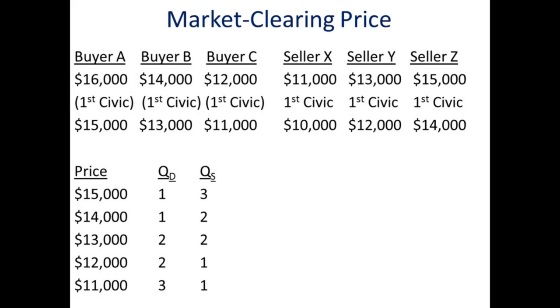Sometimes this process by which the market-clearing price comes about is said in non-Austrian treatments to be brought about by trial and error. But that's not the case — that's not the argument we're making. The argument is that buyers and sellers are able to anticipate where the market will clear. This is what makes a good entrepreneur: they can anticipate what the actual market price that clears the market will be. And therefore they bring forth that supply which does, in fact, clear the market.